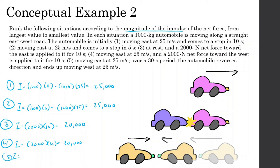Situation five: moving east at 25 m/s, reverses direction to end up moving west at 25 m/s. Impulse = 1,000 × (−25 − 25) = −50,000, so the magnitude is 50,000. The ranking from largest to smallest is: 5, then 1 and 2 tied, then 3 and 4 tied.